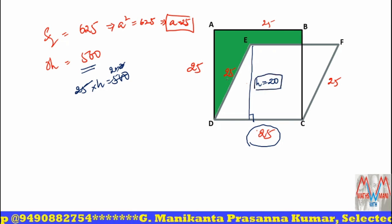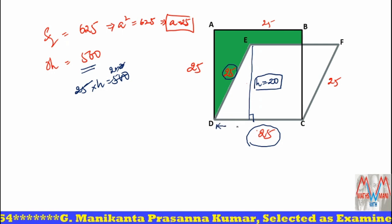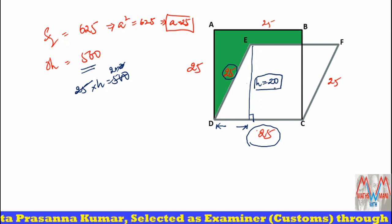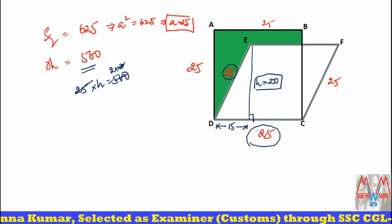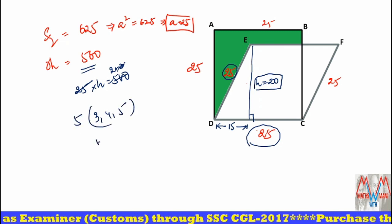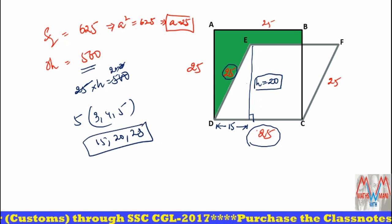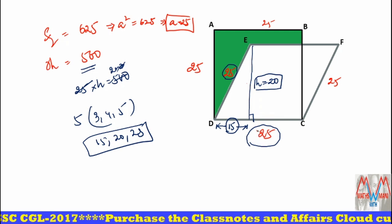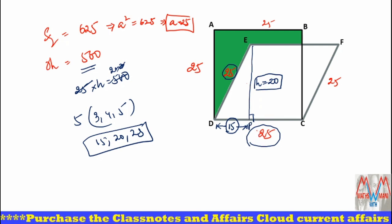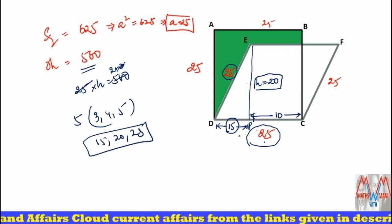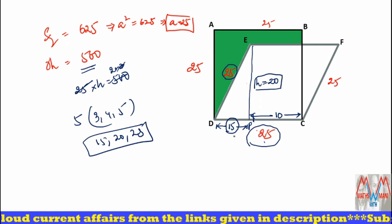And this is hypotenuse, it is 25. Now tell me what about this length? It is equal to 25, 20, and 15 is a triplet. We know that 3, 4, 5 is a triplet. If I multiply the triplet with 5, 15, 20, 25 is also a triplet. So that's why it is 15. And what about this? Suppose it is p. If DP is 15, now tell me what about PC? It is equal to 25 minus 15, which is 10.